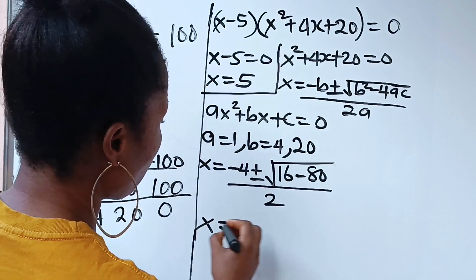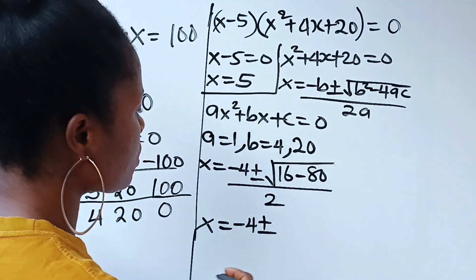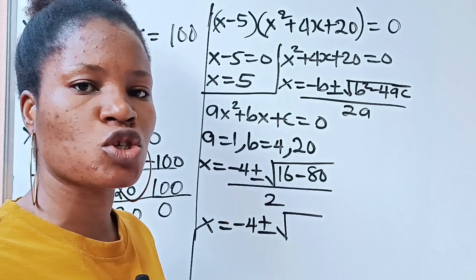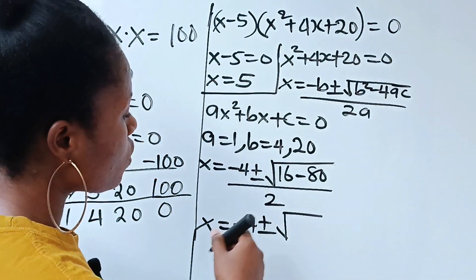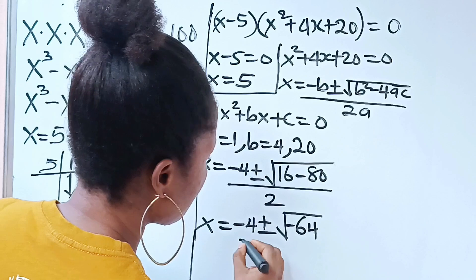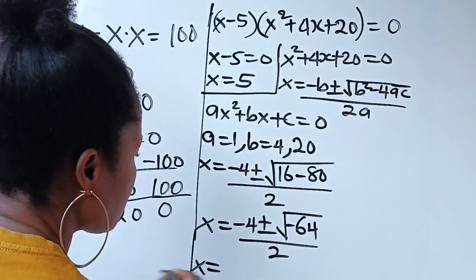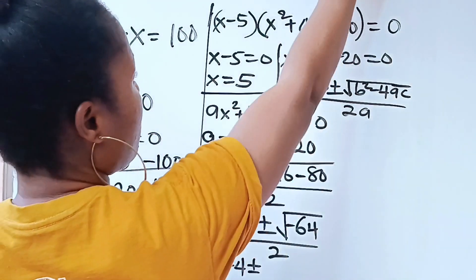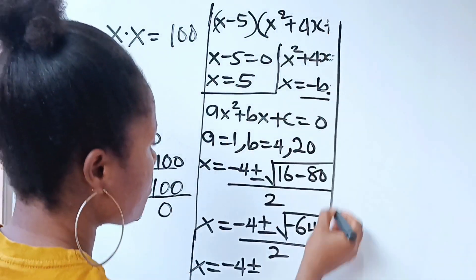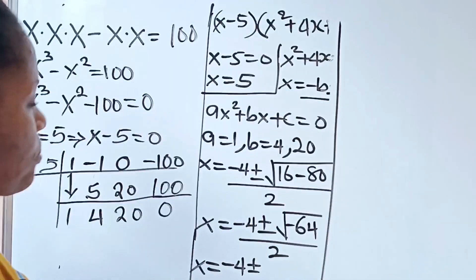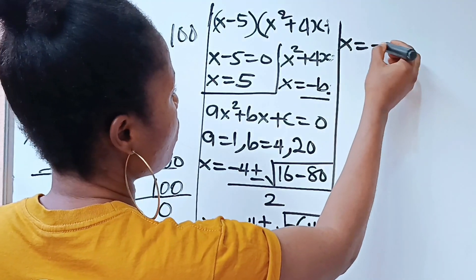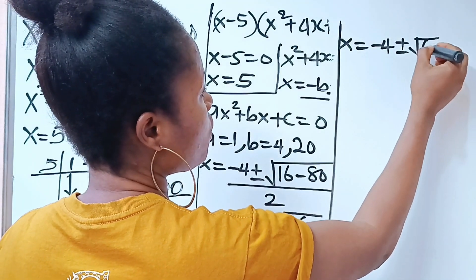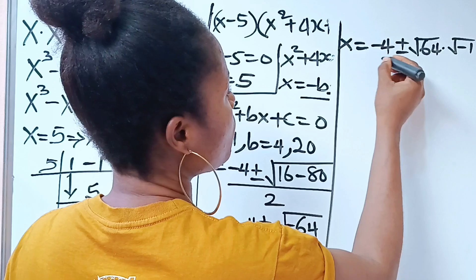So we have x equals minus 4 plus or minus the square root of 16 minus 80, which gives us minus 64, divided by 2. The square root of minus 64 can be written as the square root of 64 multiplied by the square root of minus 1, all divided by 2.